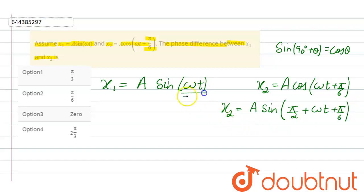Now this is the first phase, that is omega t, and this is the second phase. On adding pi by 2 plus pi by 6, here we get omega t plus 2 pi by 3.